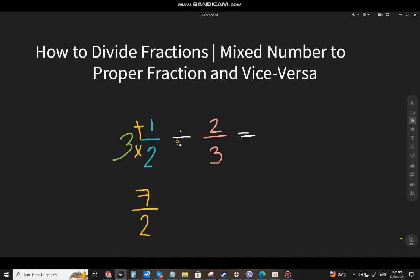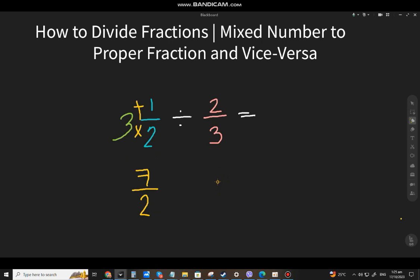Now for this one, divided by 2⁄3, you will get the reciprocal of the divisor, which is 2⁄3. So if you're going to get the reciprocal, you just have to switch it or swap. The numerator will become the denominator, and the denominator will become the numerator.